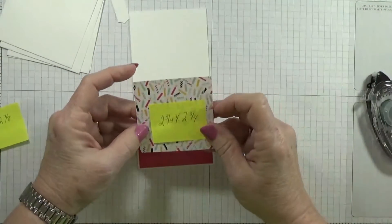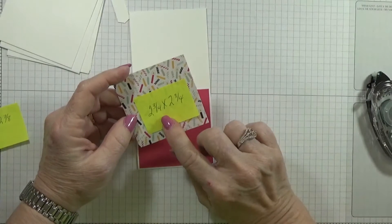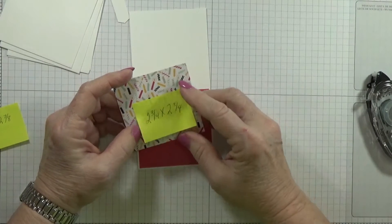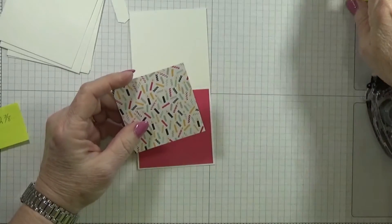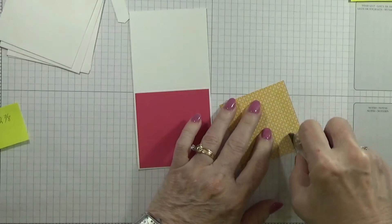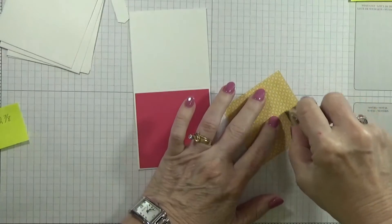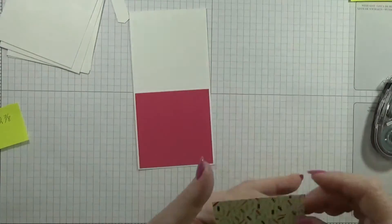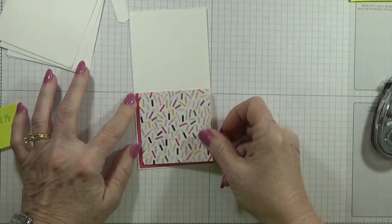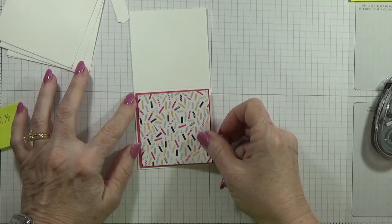And then this designer series paper, which I said was It's My Party, is cut at 2 and 3/4 by 2 and 3/4. Let's get that down. Turn that around, get my candles right side up. This also has a small border.